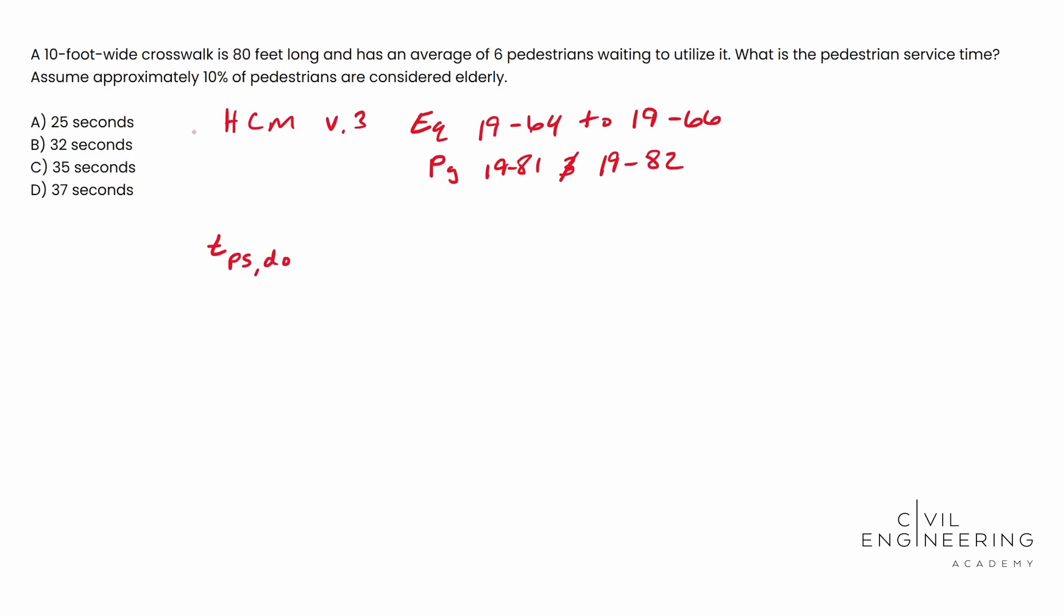T sub PS comma DO is equal to 3.2, I'll explain this here in a minute, plus LD over SP, plus 0.27 times NPD dash E oh. All right, now what in the world are these?